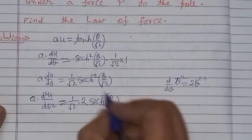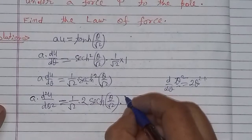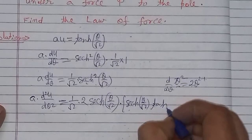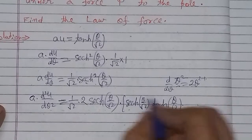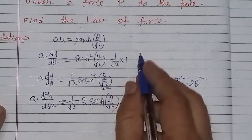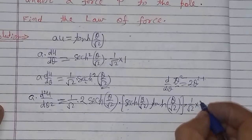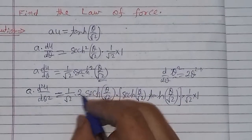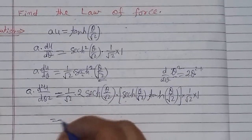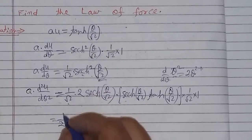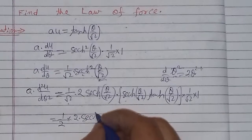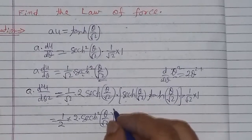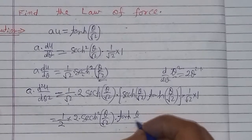Sec hyperbolic ka differentiation hota hai: sec hyperbolic theta by root 2 into tan hyperbolic theta upon square root 2. Lekin yahan theta by 2 hai, toh iska dobaara differentiation: jaisi ki upar kiya tha, uski value aayi thi one upon root 2. Aur theta ke respect mein theta ka differentiation one ke equal ho gaya. Toh one upon root 2 aur one upon root 2, in dono ka multiplication hoga, toh root 2 into root 2 equals 2 ho jayega. Aur yahan par 1 into 2, sec into sec: sec hyperbolic square theta upon square root 2 into tan hyperbolic theta upon square root 2.